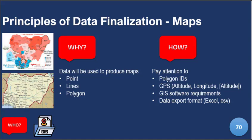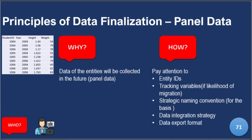If it's panel data, you really have to be careful. Panel data means data is collected more than once over time, so entities will be compared over time. Entity ID variables are very important here. You also have to be sure that your dataset has variables that help track migration, since people may have moved. Use strategic naming conventions so that when you're comparing the end line with the baseline or mid-line, you know what to do. There is also what we call a data integration strategy, because ultimately you'll have different sets of data talking to each other over a period of time.